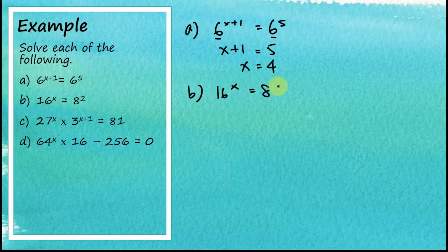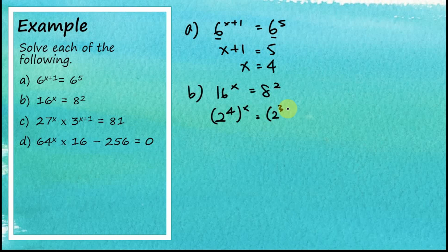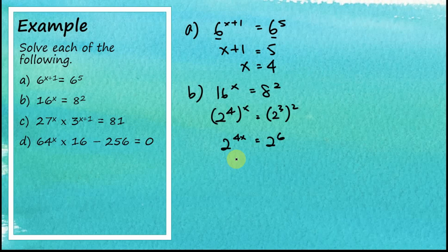For part b: 16 to the power of x equals eight squared. The bases are not the same, but we can try to change the base. We know 16 equals two to the power of four, and eight equals two cubed. So we get two to the power of four x equals two to the power of six. Now the bases are the same, so four x equals six.